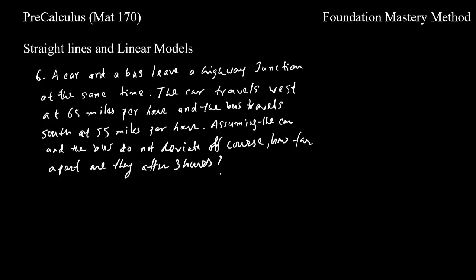Here's another example using the distance formula. A car and bus leave a highway junction at the same time. The car travels west at 65 miles per hour and the bus travels south at 55 miles per hour. Assuming neither deviates from course, how far apart are they after three hours? Let's make a diagram: the car heads west and the bus heads south.